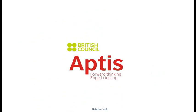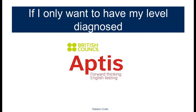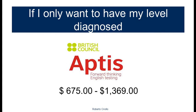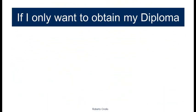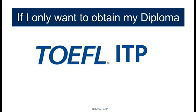Here's my advice depending on your situation and objectives. If you only want to know what level you have, go for APTIS — a new test developed by the British Council that is fast, practical, and not very expensive, ranging between 675 and 1,369 pesos depending on the version. If your objective is to obtain your diploma through Titulación Automática, you will normally be asked to take the ITP paper-based version in school, scoring 550 points — it costs about 940 pesos.